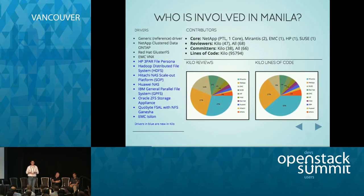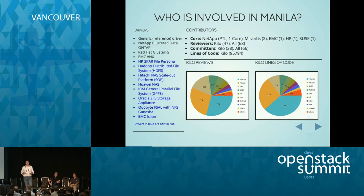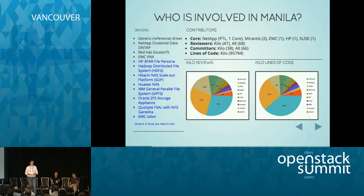Regarding who's been involved in Manila: we entered the Kilo release with four drivers — one from Red Hat, one from NetApp, and one from EMC — and added eight additional drivers, showing an explosion of interest from companies wanting to expose their products through the Manila API. The core team officially doubled in size, adding representation from SUSE, HP, Mirantis, and NetApp. There was a large increase in reviewers, committers, and lines of code. These Stackalytics charts show the diversity — this isn't a single corporate entity. While NetApp started the project in 2013, it's truly a diverse community.